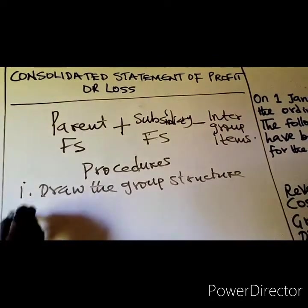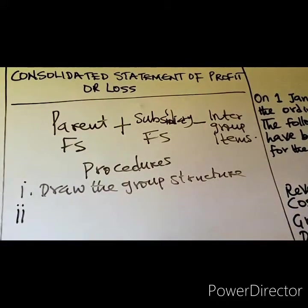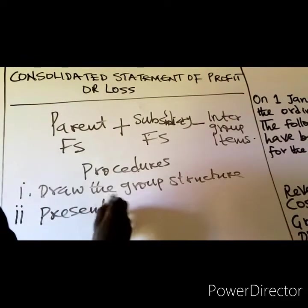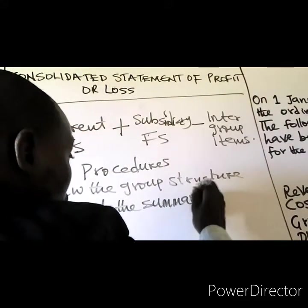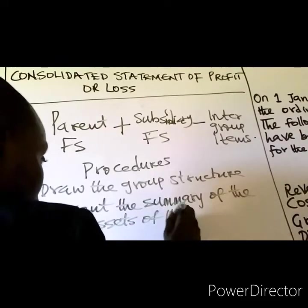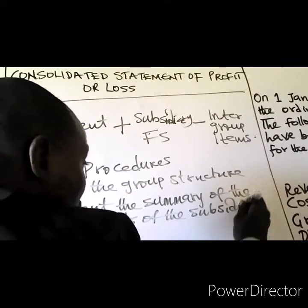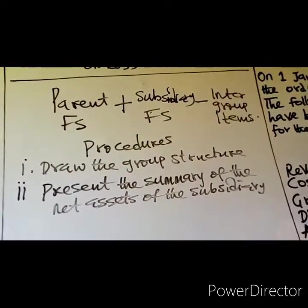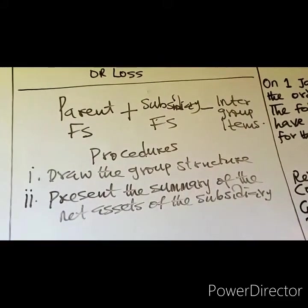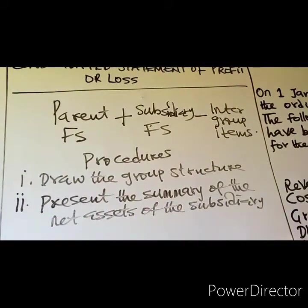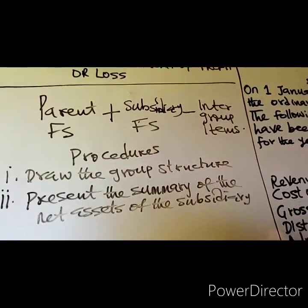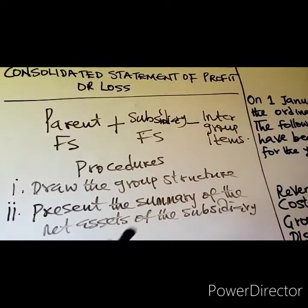Number two is to present the summary of the net assets of the subsidiary. This may not be necessary where you are not required to calculate goodwill. If goodwill is not required, you don't need the summary of net assets. It will be required where you are required to calculate goodwill on acquisition of the subsidiary.